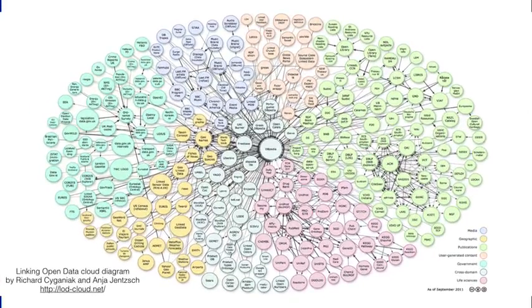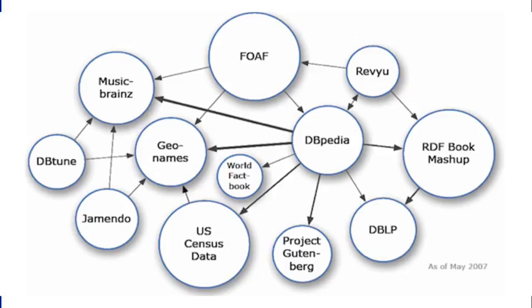Remember this diagram? This is the linking open data cloud diagram, and let's look at its evolution over a few years, because it illustrates Metcalfe's law, I think, very nicely. So the earliest version of the linking open data diagram that I've been able to find is from 2007, and there were only a handful of data sets that were published using open data formats.